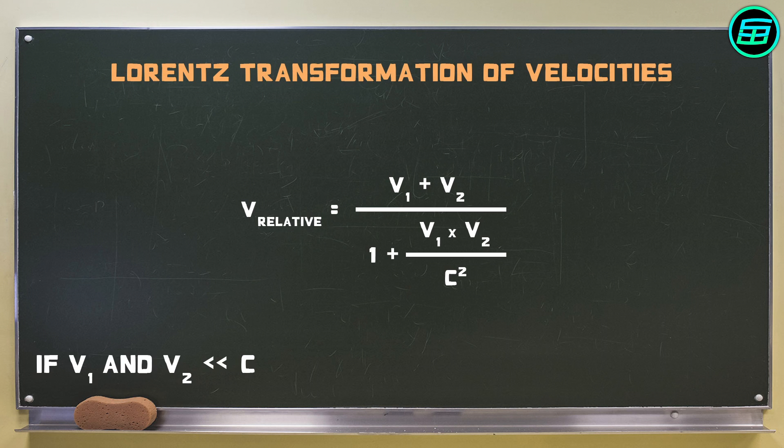When the speeds of objects are much slower than the speed of light, v1 times v2 over c squared is so small that we can ignore it. However, when the speeds of objects are significant compared to the speed of light, we can't ignore this factor.